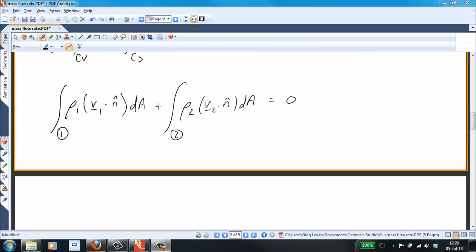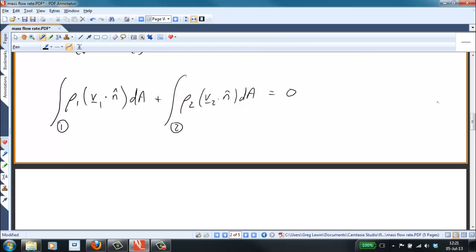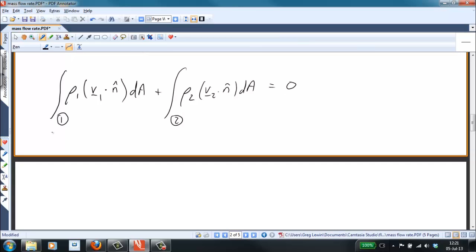Now on the left-hand side, for both cases we're considering the density to be constant across the area. So on the left-hand side, we realize that this integral here is going to be basically rho one V one bar, where that's the average velocity, times A one, except that we know that the flow is coming in, so the velocity dotted with the outward pointing normal is going to end up giving us a negative sign.